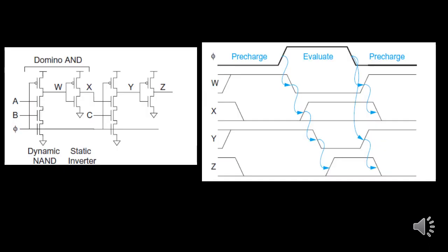The figure shows a domino circuit with two stages. Between the stages, an inverter is added — between W and X there is an inverter, and similarly between Y and Z there is an inverter. This inverter is added to remove the monotonicity problem: when the input changes to low, the output should immediately go high but does not, so the inverter is used to drive that transition.